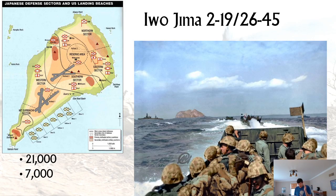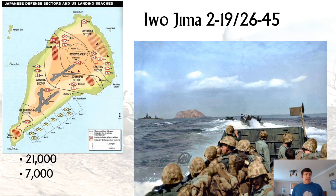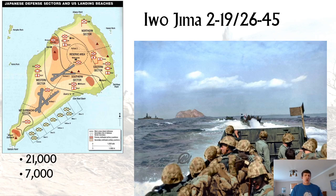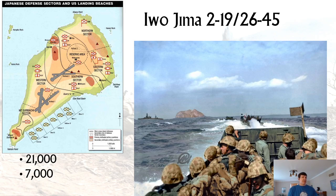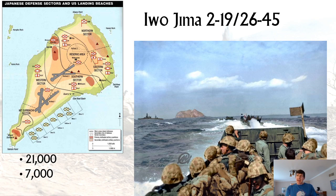Iwo Jima was attacked in February 1945, just as American, British, and Canadian forces were about ready to cross the Rhine River, and the Russians were 50 miles from Berlin. This tiny island was flat with two airfields and they were building a third. They knew there were over 21,000 Japanese defending it. They bombarded it from sea and air for seven days. It was still an active volcano — fissures into the volcanic ash — and right here is Mount Suribachi with marines on landing craft going towards it.